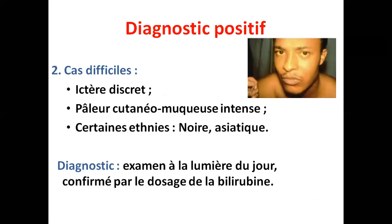Le diagnostic est plus difficile lorsque l'ictère est discret, n'apparaissant pas au niveau cutané, et très discret au niveau des conjonctives — surtout si le malade a en plus une pâleur cutanée, comme chez les anémies hémolytiques. Pour certaines ethnies, comme les Asiatiques dont la peau vire vers le jaune, ou la race noire, c'est plus difficile. Dans ces cas, ce sont les conjonctives qui aident, examinées à la lumière du jour. Le dernier mot revient toujours au dosage de la bilirubine.